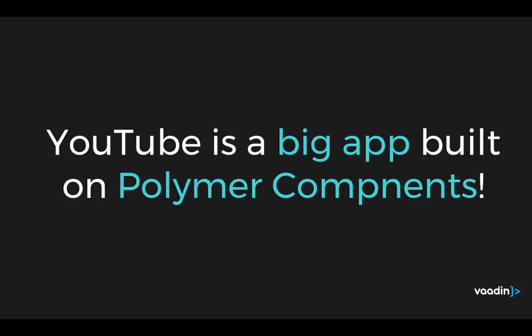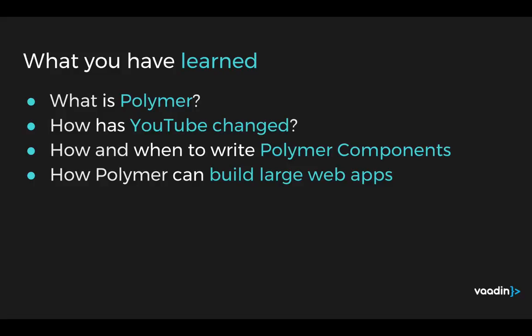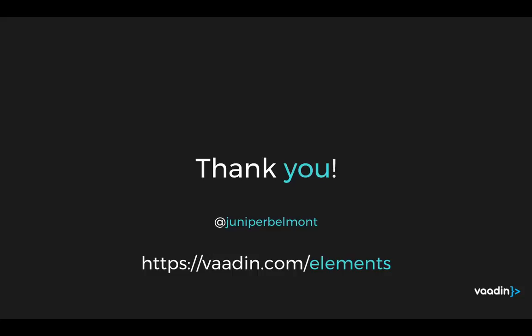YouTube is a large web app built with Polymer components. From the front end, you can see components within components — each doing a specific thing or working in a bigger context with Polymer components to build this large web app. You could use the same idea to build your own web app. To recap: Polymer is a library for building reusable and modular components built on web standards. We saw how YouTube changed to use Polymer, when and how to write Polymer components versus HTML elements, and that Polymer can build large web apps like the new YouTube. You can find more resources at vaadin.com/elements or polymer-project.org. Thank you so much for watching.